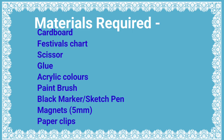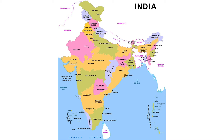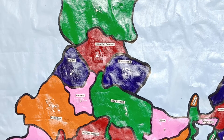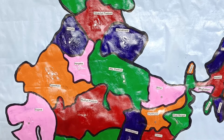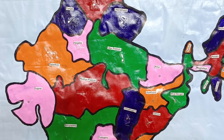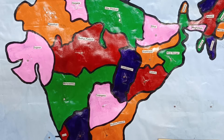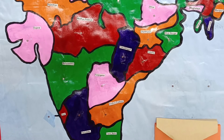First thing we have to do is make a map and color each and every state with different colors. Here I have used two or three colors — it's totally your wish which colors you want to use. Once the coloring is done, give a nice outline with a black color marker or with paints, whatever you have.